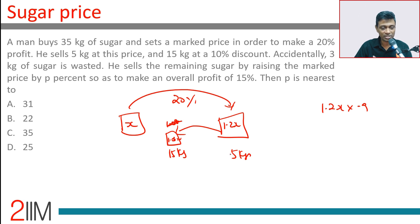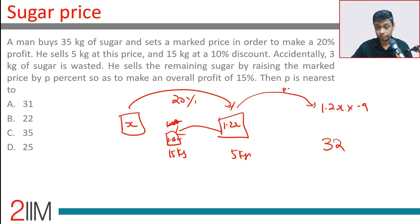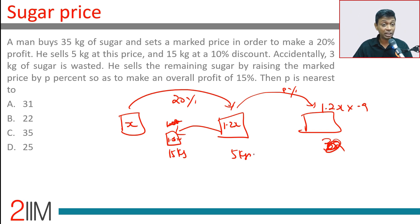3 kilograms of sugar is wasted, so he only manages to sell 32 kilograms total. He has sold 5 + 15 = 20 kg so far, leaving 15 kg remaining. Subtract the 3 wasted — that gives 12 kilograms left to sell.